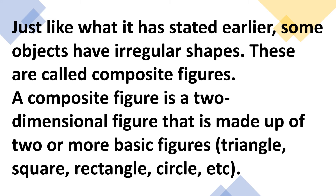Just like what was stated earlier, some objects have irregular shapes. These are called composite figures. A composite figure is a two-dimensional figure that is made up of two or more basic figures, such as triangle, square, rectangle, circle, and many more.